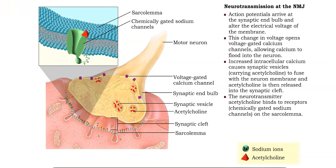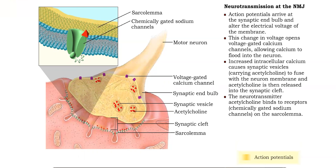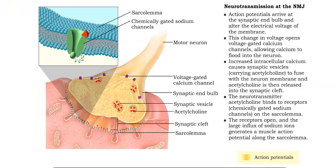Acetylcholine triggers the opening of sodium-gated channels, flooding the interior of the cell with sodium ions. Increased sodium ion levels generate a muscle action potential that travels along the sarcolemma.